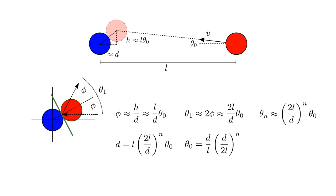We've seen that when a ball moving at an angle theta zero strikes a fixed ball, it bounces off at an angle of about theta one equals two L over D times theta zero, where D is the ball diameter and L is the horizontal distance traveled.